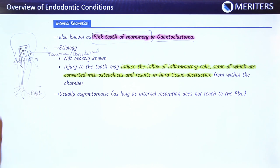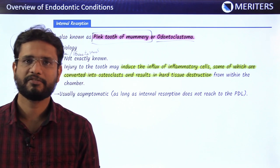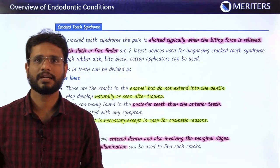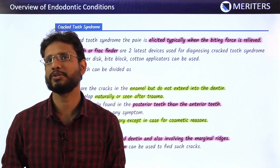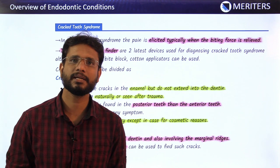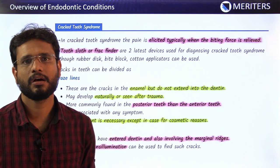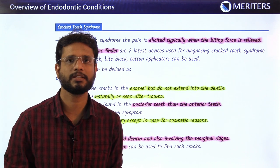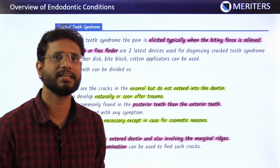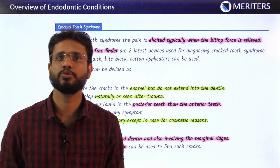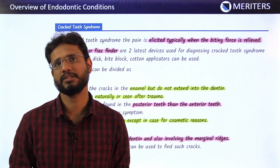If the infection or inflammatory cells go to the periodontal ligament, they may further cause pain. Cracked tooth syndrome, as the name indicates, produces symptoms due to a cracked tooth. The typical feature is that pain occurs when the patient relieves the pressure — the patient is asked to bite on a device called FragFinder or a tooth slot placed in the occlusion, and pain occurs when occlusion is released.